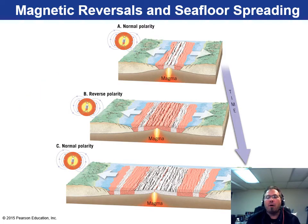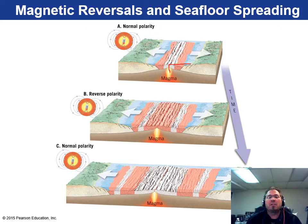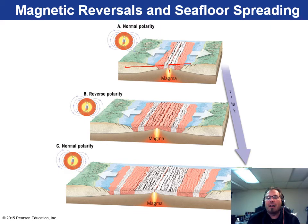Magnetic reversals and seafloor spreading were a huge leap forward. At a divergent boundary, magma gets pushed out in each direction. When that rock first cools, it grabs onto Earth's magnetic field. If the magnetic field flips, the rock cools in that direction — and you get these magnetic stripes. You see these stripes as plain as day on both sides of the spreading ridge going out in time, perfectly symmetrical and matching across the ridge.